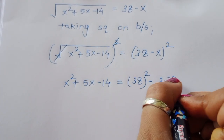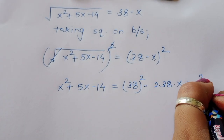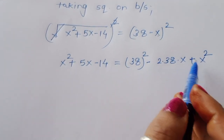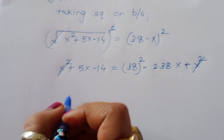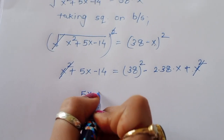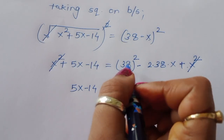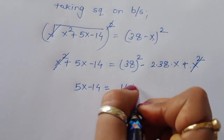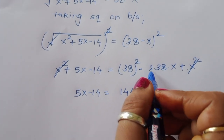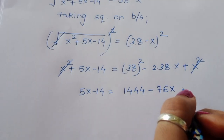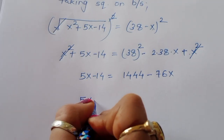And plus b² = x². So we get: x² + 5x - 14 = 1444 - 76x + x². Now x² cancels from both sides, leaving: 5x - 14 = 1444 - 76x. So 5x + 76x = 1444 + 14, which gives 81x = 1458.